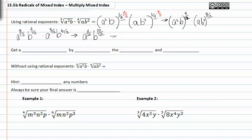From here we can rewrite it with the exponents' numerators separate from the denominators. This will give us a to the eleventh, b to the tenth, all raised to the one-twelfth. You can always check if you've done this correctly by multiplying one-twelfth back down to the exponents inside the parentheses, to see if you come out with eleven-twelfths and ten-twelfths.